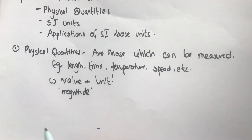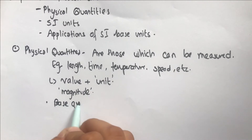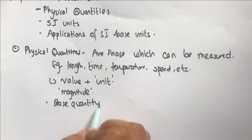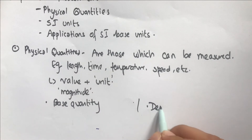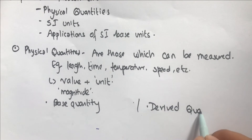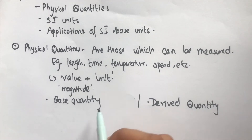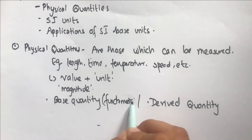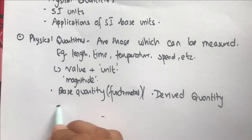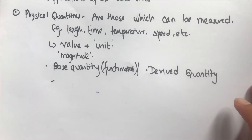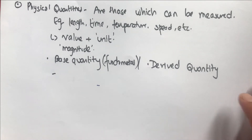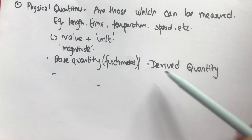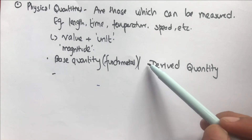Physical quantities can be broadly classified into two groups: base quantities and derived quantities. Base quantities are sometimes also called fundamental quantities. Base quantities are those which are independent. There are seven base quantities in physics, and all other quantities are derived from these base quantities.